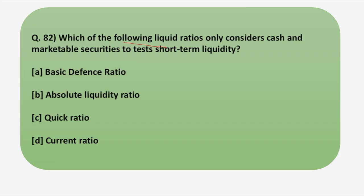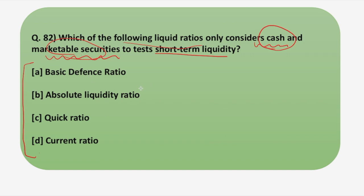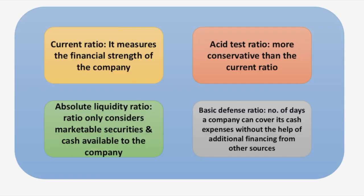Which of the following liquid ratios only considers cash and the marketable securities to test the short-term liquidity? Four options have been given and you have to identify which ratio only considers cash and marketable securities. Let's discuss these ratios one by one. Firstly, a liquidity ratio tells one's ability to pay off its debt as and when it becomes due.